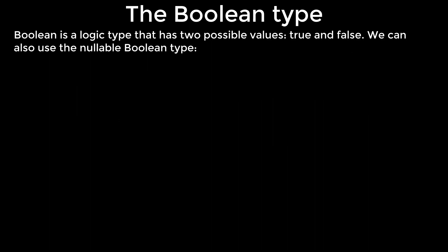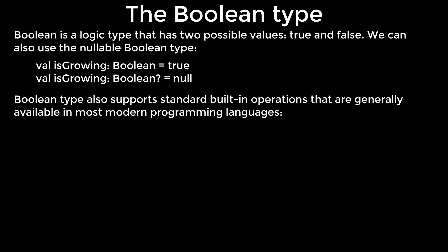The Boolean type: Boolean is a logic type that has two possible values, true and false. We can also use the nullable Boolean type. Boolean type also supports standard built-in operations that are generally available in most modern programming languages.